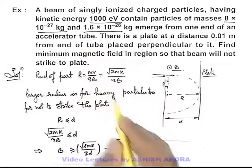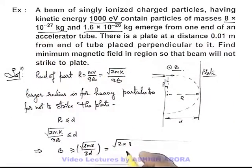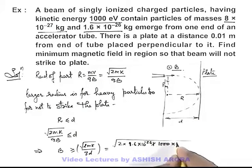So this will be 1.6 into 10 to power minus 26 kilogram. So it will be 1.6 into 10 to power minus 26 multiplied by kinetic energy here is thousand electron volt. This will be 1000 into 1.6 into 10 to power minus 19.